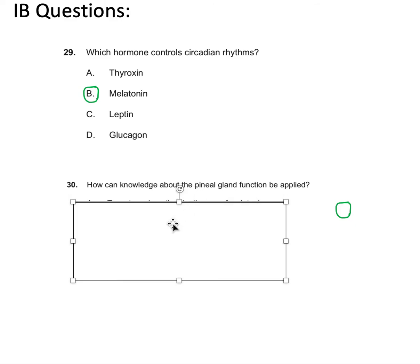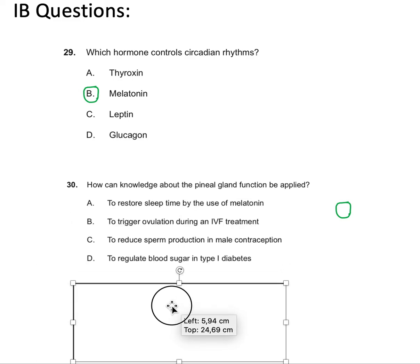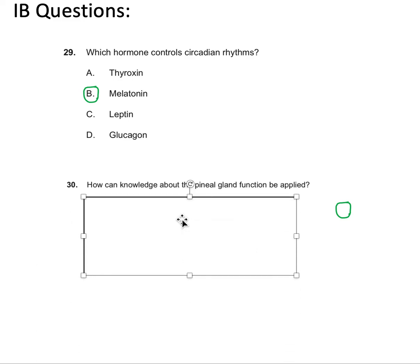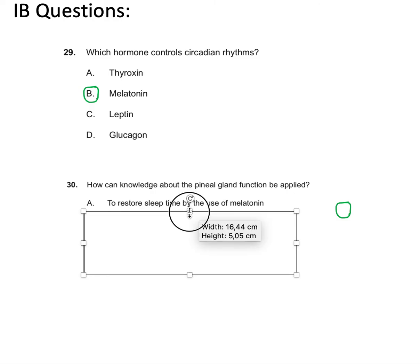I'll show you the question first so you can try it. How can knowledge about the pineal gland function be applied? We know what the pineal gland is. It makes these sleeping and awake hormones. And the SCN is affecting it. So the question is saying, with the knowledge about pineal gland, how can it be applied? Let's see A. It says to restore sleep time by the use of melatonin. This sounds like it could be an answer. It's getting you back to sleep by using melatonin. And melatonin is the sleep hormone. So that'd be logical.